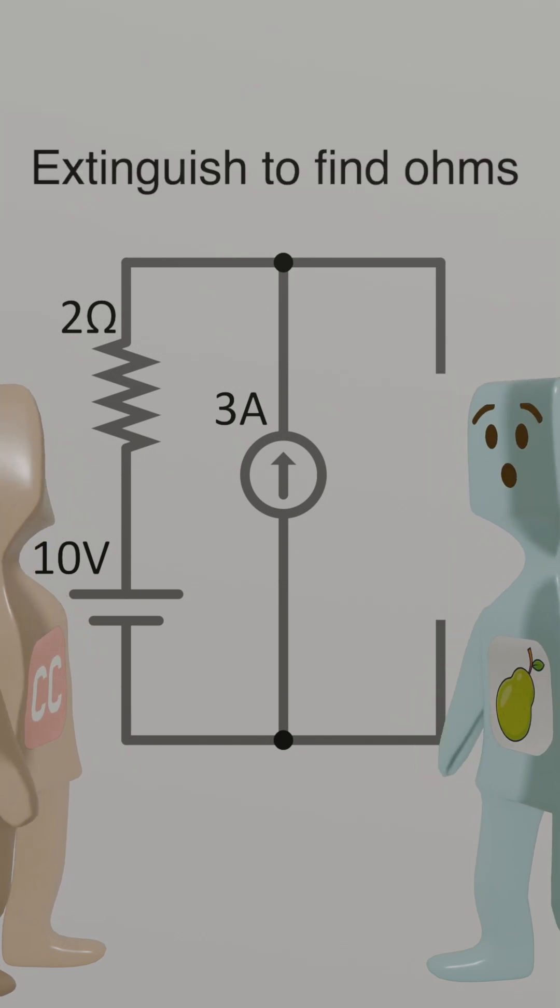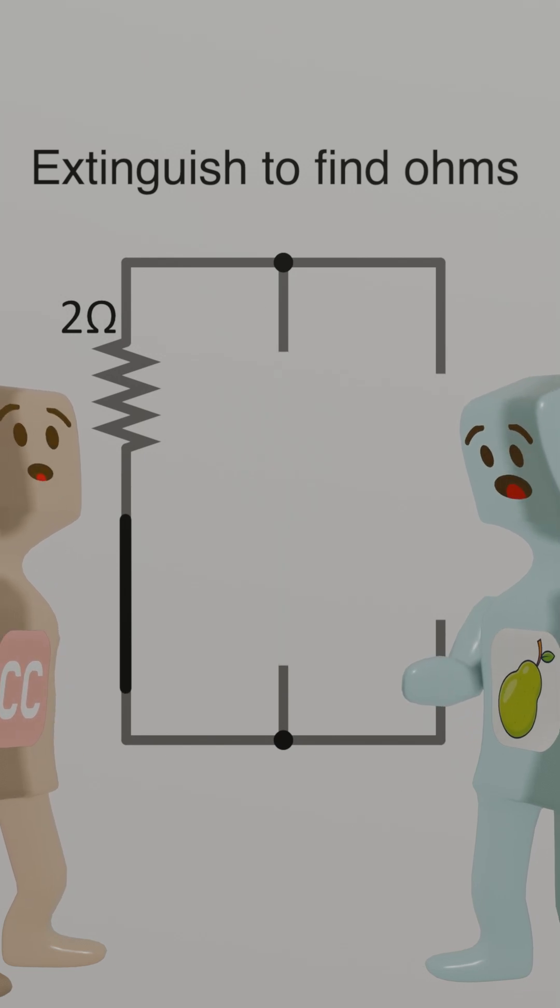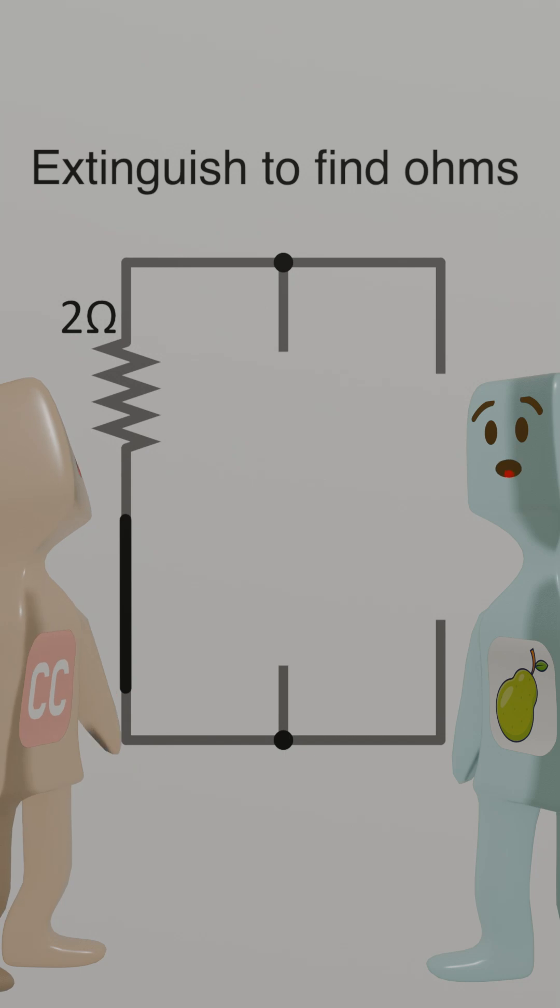Step 2. Extinguish to find ohms. Kill the 10-volt source, kill the 3-amp source. Looking back, we only see the 2-ohm resistor.